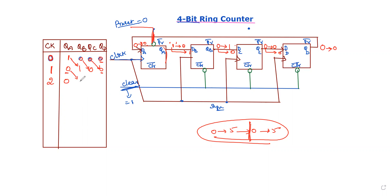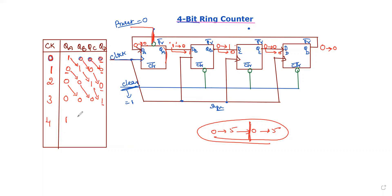After the third clock pulse, the 0 moves to the leftmost position, shifting right. After the fourth clock pulse, the 1 is placed at the leftmost position. The sequence shifts through all positions.